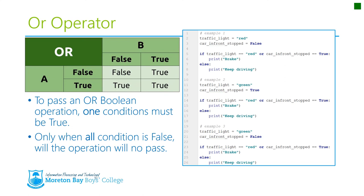In the final scenario, the traffic light is green — that's false — and the car in front stopped is also false. False or false gives us false, so we print 'keep driving', which is what you want to do.